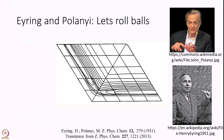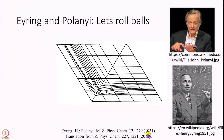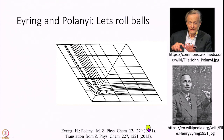I want to tell you about work from a far-off era - 1931 - introduced by two famous people, Eyring and Polanyi. These two gentlemen were instrumental in understanding rate theories in many different ways. In this 1931 paper - a translation of the original German paper is available in English - they were the first people to do something very interesting.